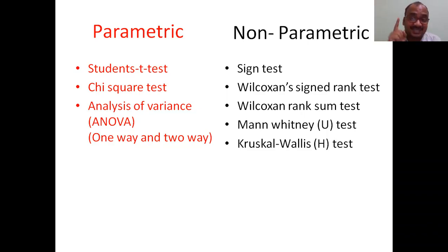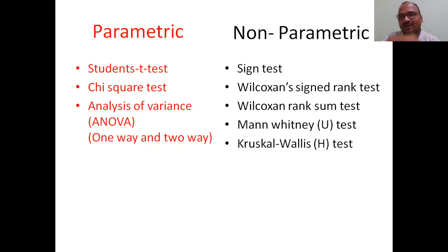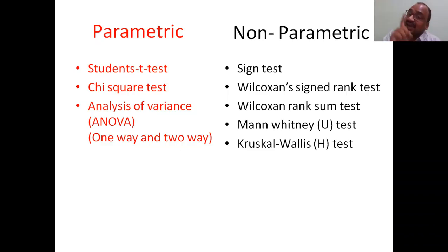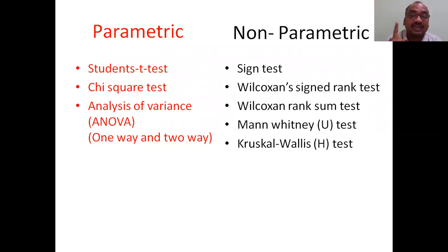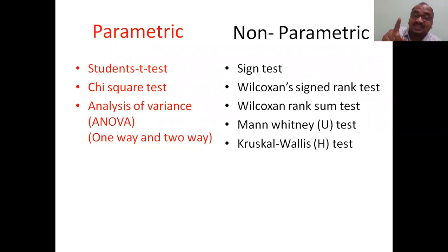Non-parametric tests include the Sign test — keep that in mind, sign as in signature. Also Wilcoxon Signed Rank test, Wilcoxon Rank Sum test, Mann-Whitney test (also called the U test, which has appeared in old question papers), and Kruskal-Wallis test (also called the H test).